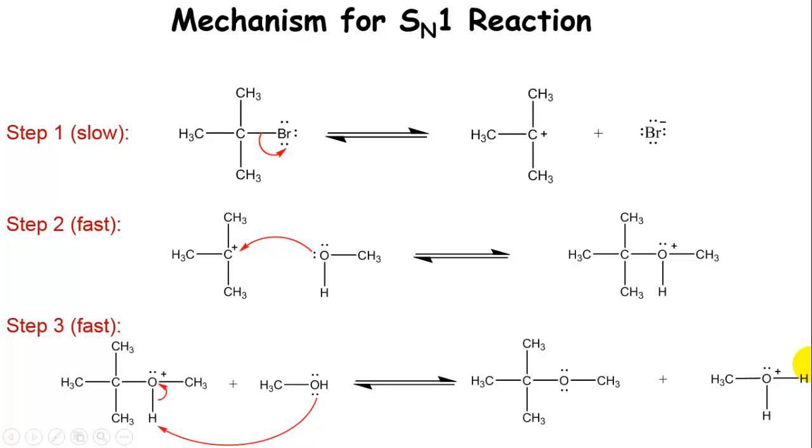So that's an example of a mechanism. Now, one thing I want to point out on this is the slow step determines the rate of the entire reaction. So in this case, the first step determines the rate of the reaction. These two happen very, very fast after that.